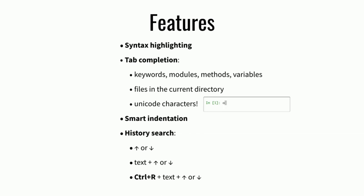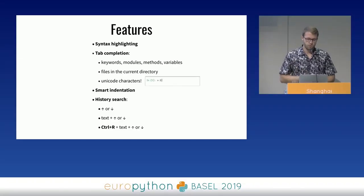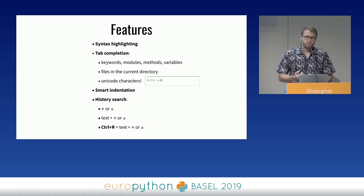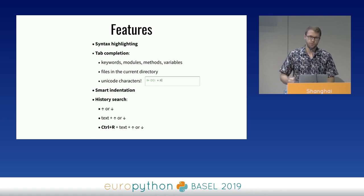It has syntax highlighting. It has tab completion — not only for keywords, modules, methods, and variables, but also for files in your current directory or for Unicode characters. It has smart indentation, so when you start writing a function or a loop and you press enter, it will automatically indent the next line. You can search in the history either with arrow up and down, by typing part of the command to match and using arrows, or by pressing Ctrl+R and then typing some text and pressing arrows to switch between results.